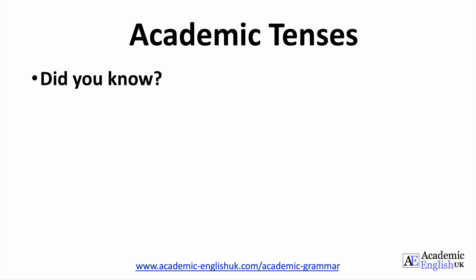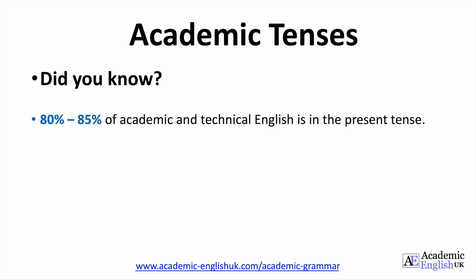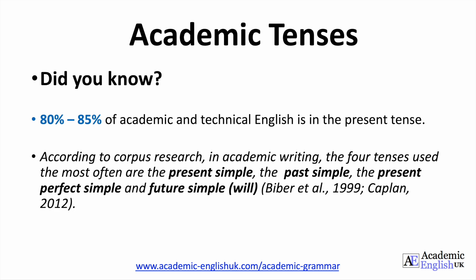Did you know that 80 to 85 percent of academic and technical English is in the present tense, according to corpus research? In academic writing, the four tenses used most often are the present simple, the past simple, the present perfect simple, and the future simple with will. That's what we are going to focus on today in this video.